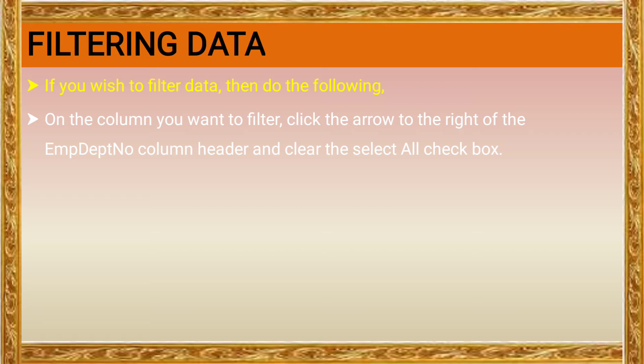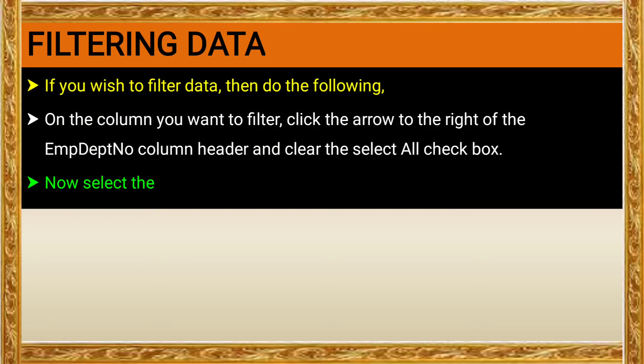Click the arrow to the right of the column header — for example, the Employee Department Number column header — and clear the 'Select All' checkbox. For example, you select one field: the Employee Department Number field. Selected values in the list, for example department 100, are required.